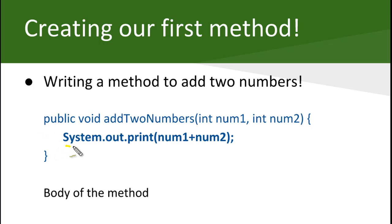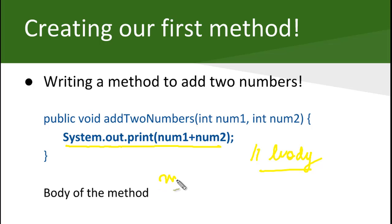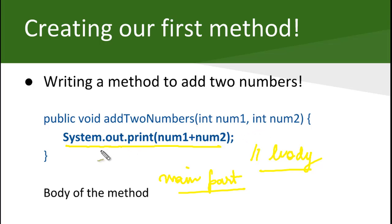As you might have guessed, this part here is basically the body of the method — this is the main part where the method performs its action. It took two arguments or parameters as we discussed, and it did something with them. Whatever that something is will be specified in the body — whatever the method will do comes in the body.